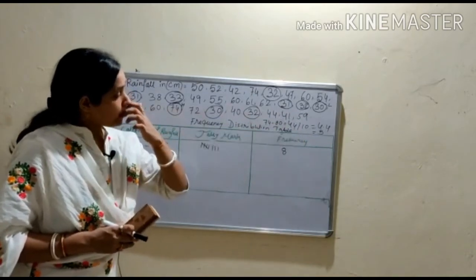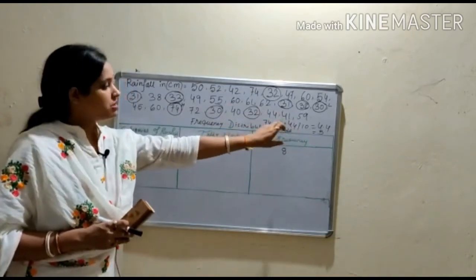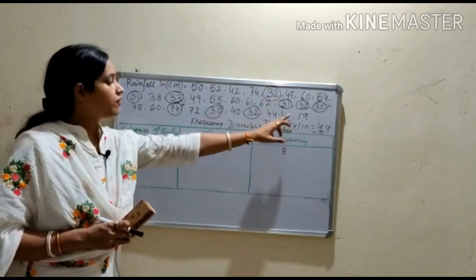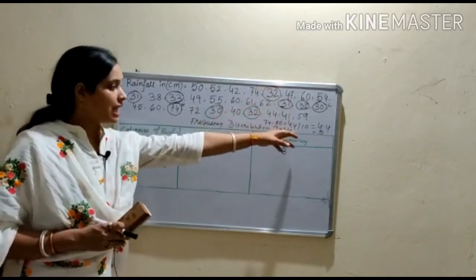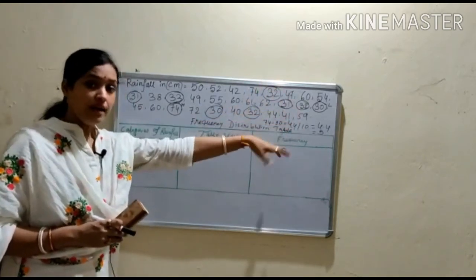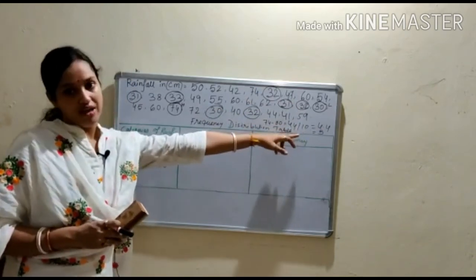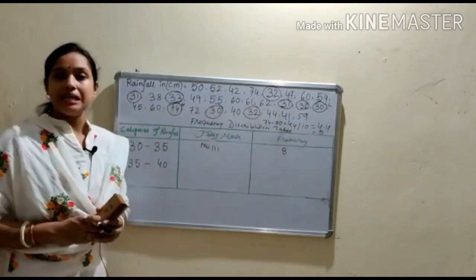Which we found from this calculation: 74 minus 30, we found 44. That divided by 10, we found 4.4, and we take it as a whole number, that means 5. So this is a simple example of how to construct a frequency distribution table.